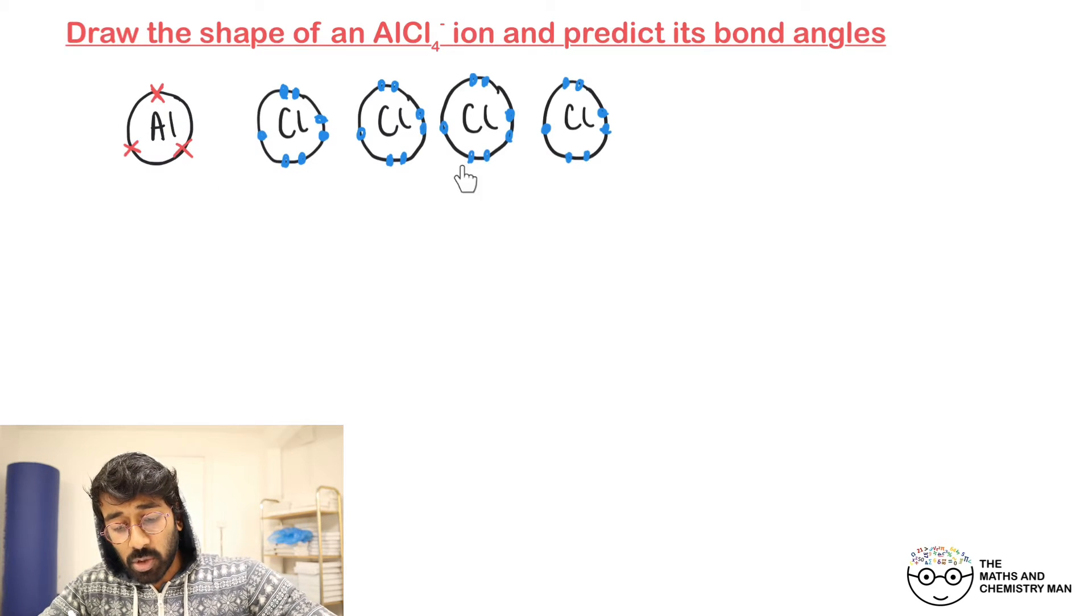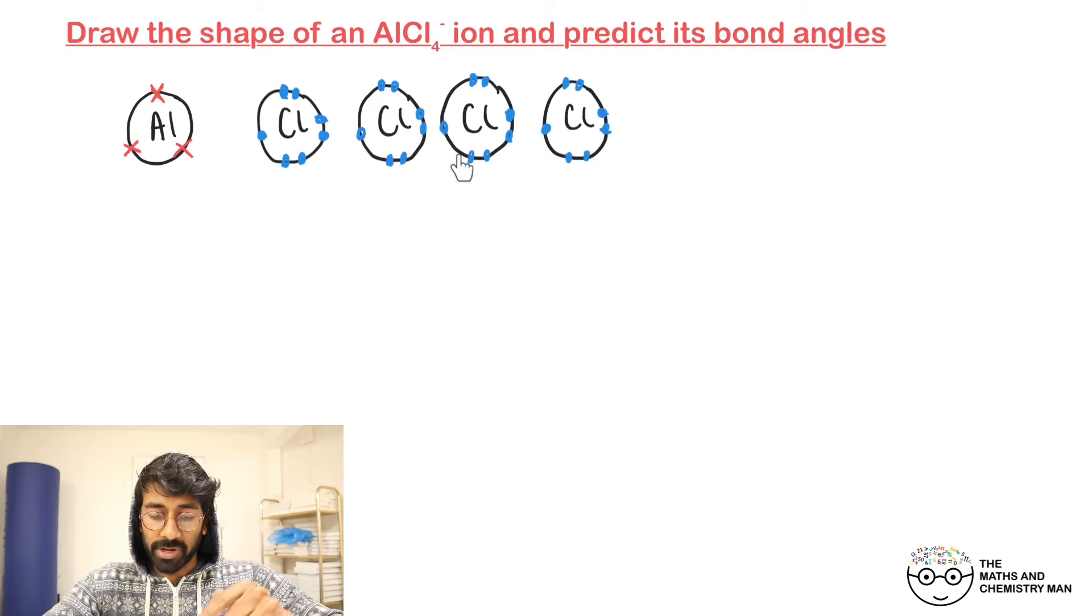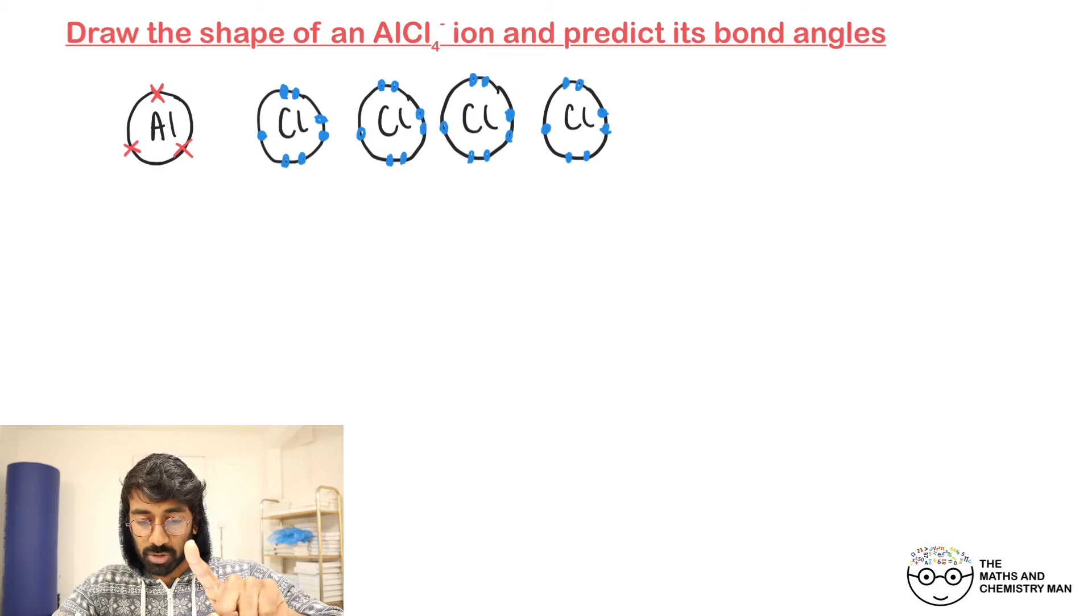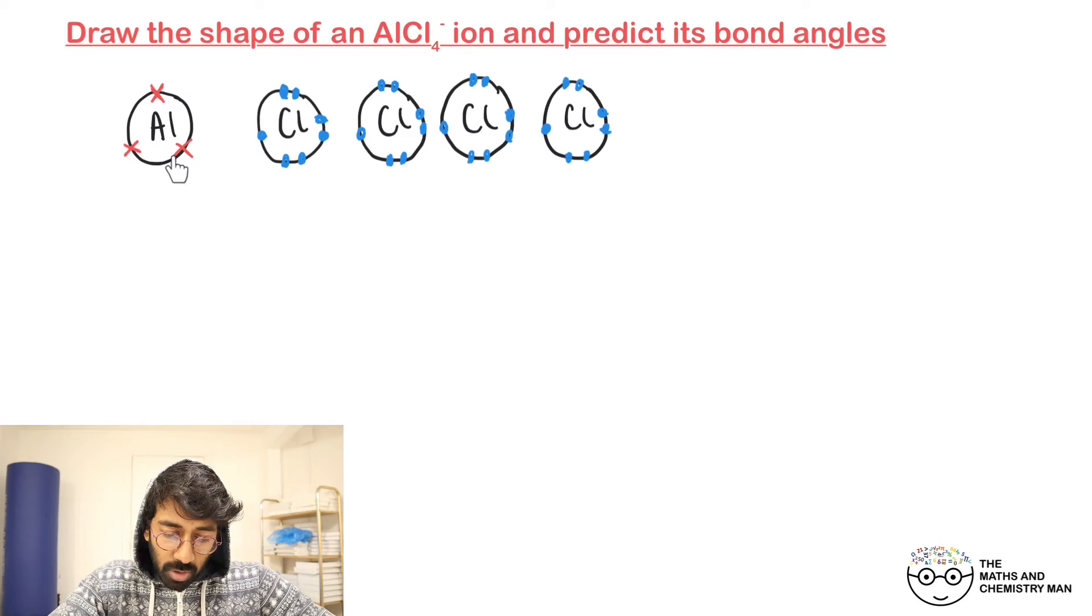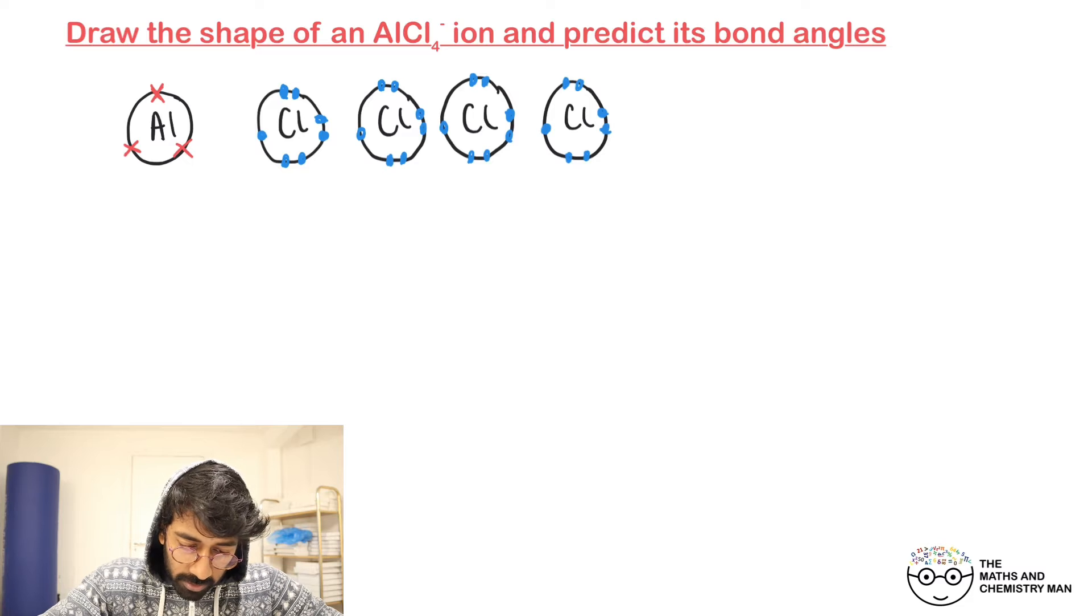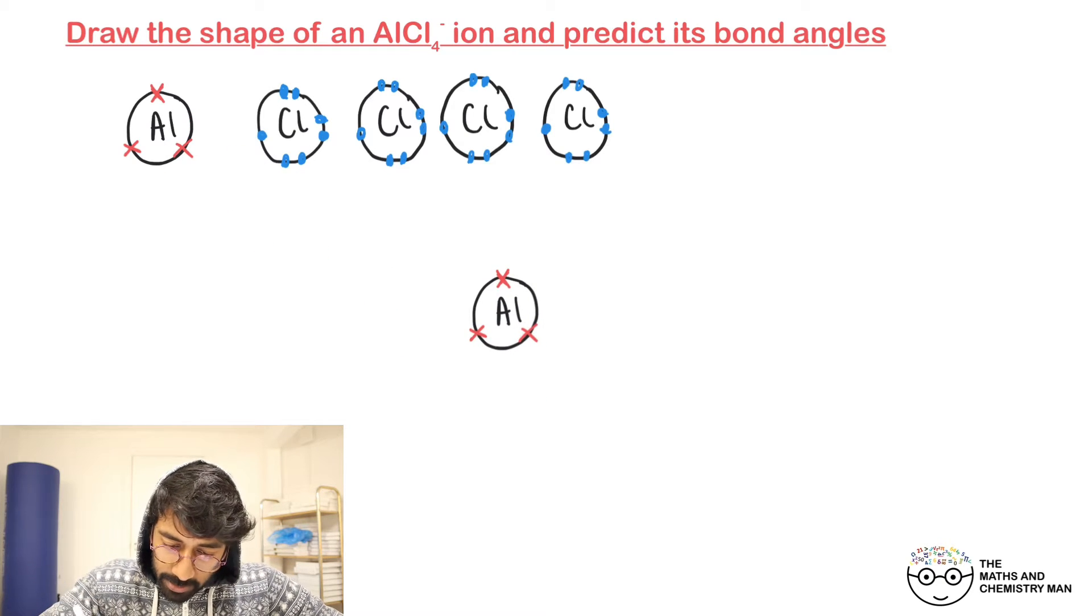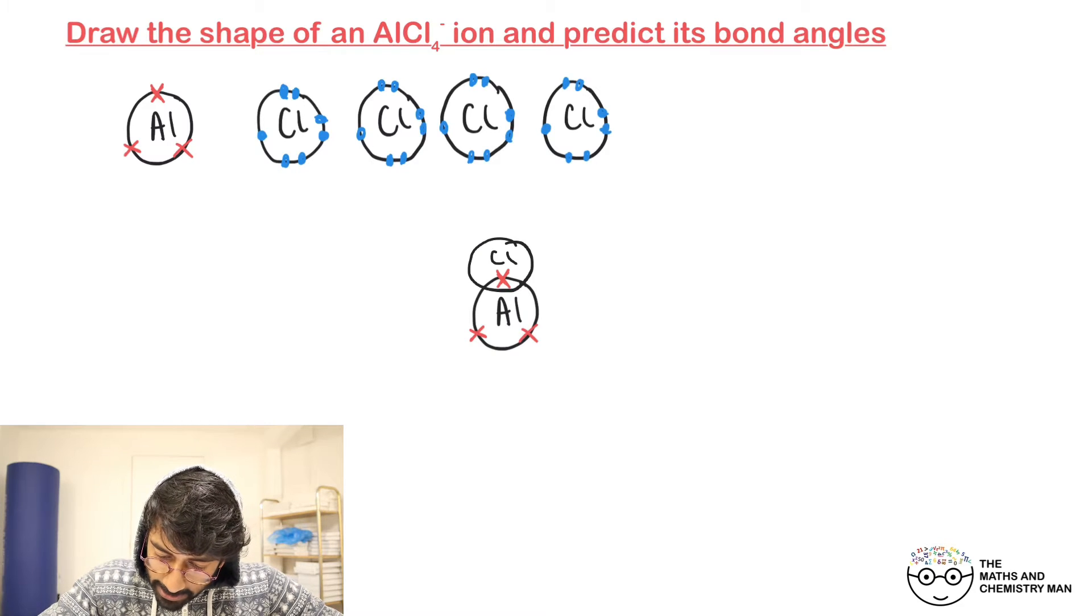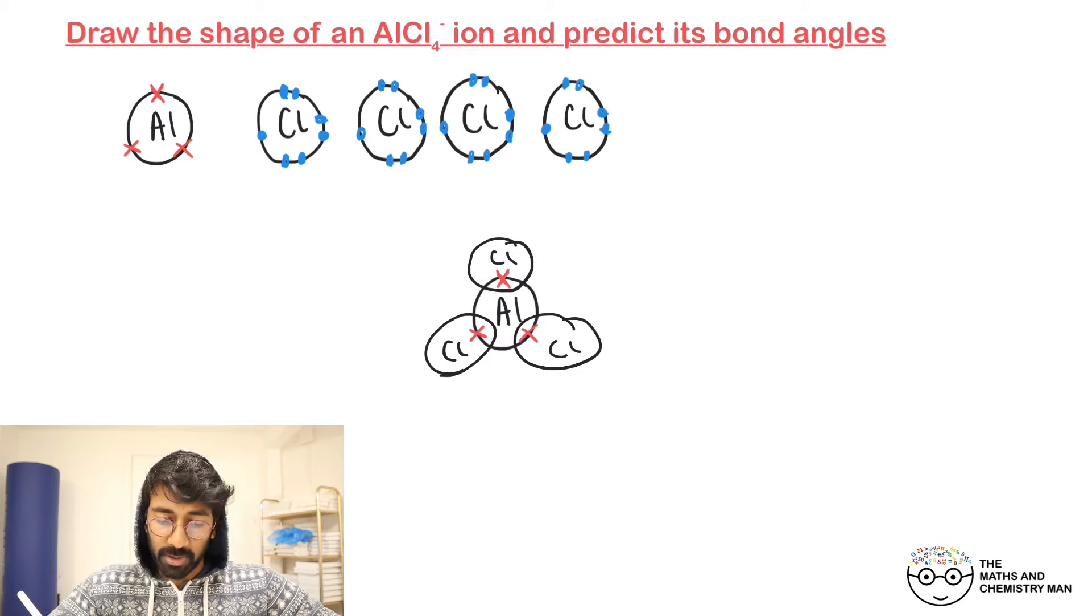Each chlorine wants one electron, so these three chlorines can happily attach onto the aluminium and they will share two electrons. Let's get aluminium drawn over here, and then we've got chlorine coming off the top here, and then another chlorine coming off here, and then another chlorine coming off there.